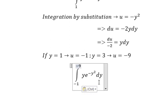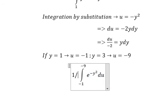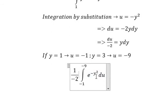y and dy we change to du over negative 2. e power negative y square we change to e to the power of u.